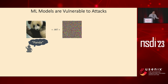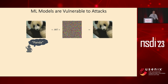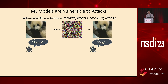Now, let's add a small amount of noise onto this image. Note that this noise is carefully crafted, and it's invisible to human eyes. The resulting image still looks like a panda. But if you feed this into the neural network, this time it will be predicted as a dog. In fact, this is one of the most typical attacks in neural networks, and it is called adversarial attacks.